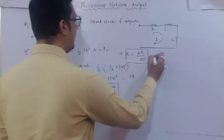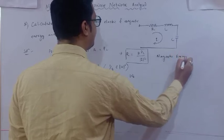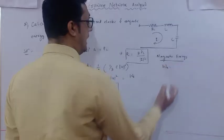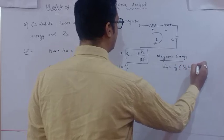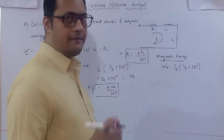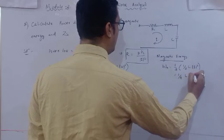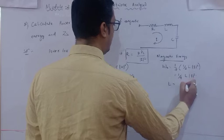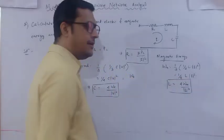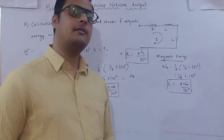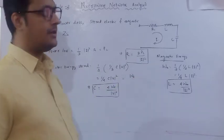For magnetic energy stored, the instantaneous value is half·L·I², and the average magnetic energy stored is WM_avg equals (1/4)·L·|I|². The inductance can be determined as L equals 4·WM divided by mod(I)². So from known power loss and stored energies, we can determine the unknown R, L, and C values.